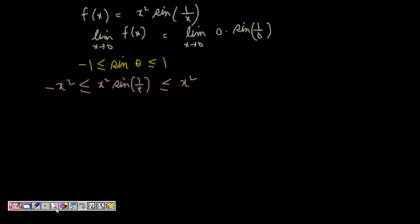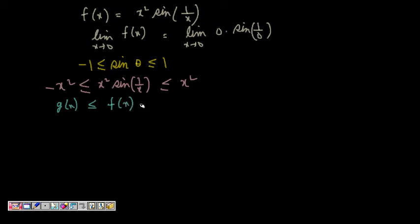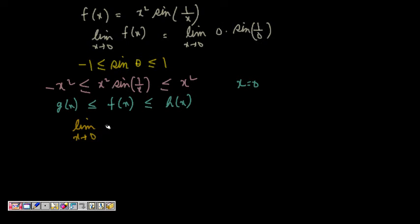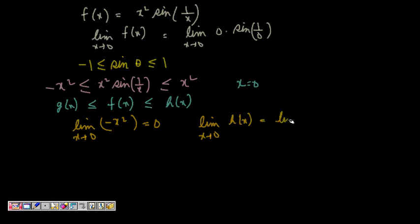This is the sandwich theorem structure: g(x) ≤ f(x) ≤ h(x). Now we want to see the limit at x = 0. The limit as x tends to 0 of g(x), which is -x², equals 0. And the limit as x tends to 0 of h(x), which is x², also equals 0.